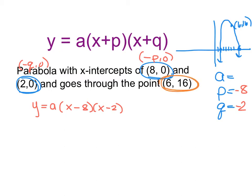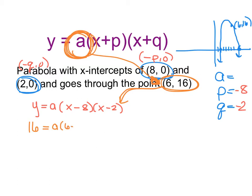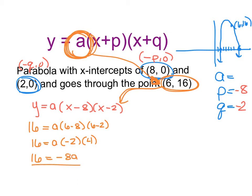That's where this point comes in. We're going to temporarily place these values into the equation in order to make the a value become obvious. We need to find the a value that makes the equation true for this particular point. Substituting in x equals six and y equals sixteen, we get sixteen equals a times six minus eight times six minus two, which simplifies to sixteen equals a times negative two times four, giving us sixteen equals negative eight a. Dividing both sides by negative eight, we find a is equal to negative two.